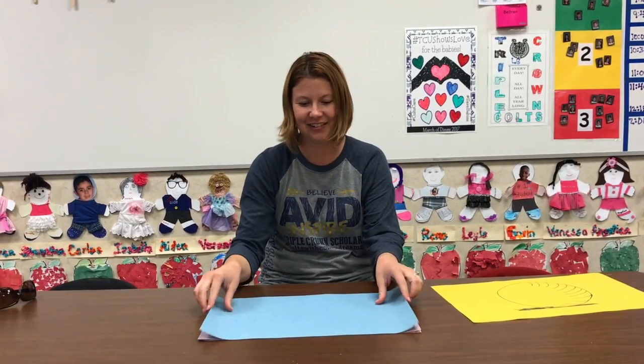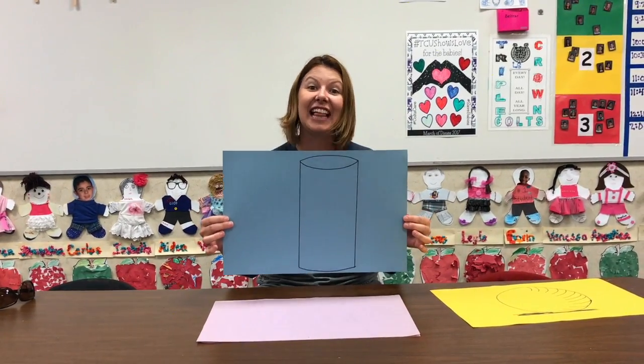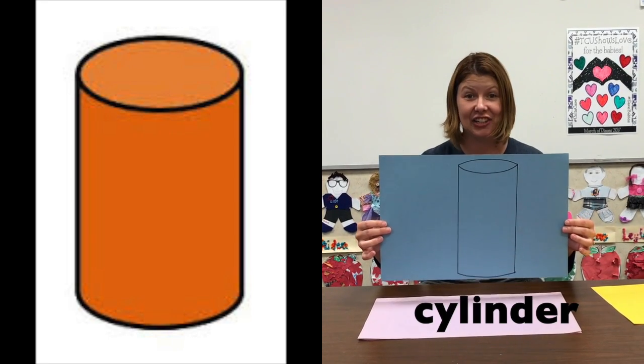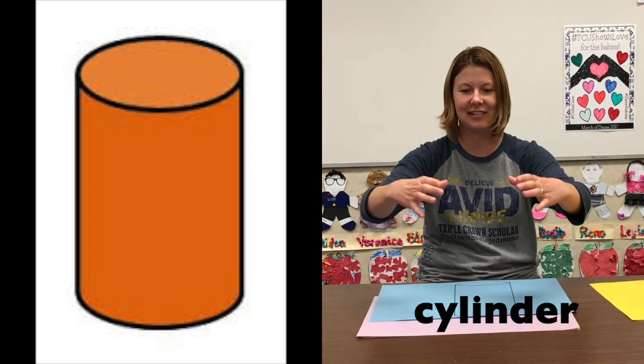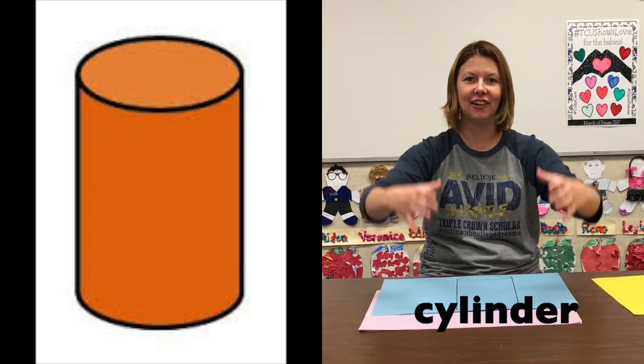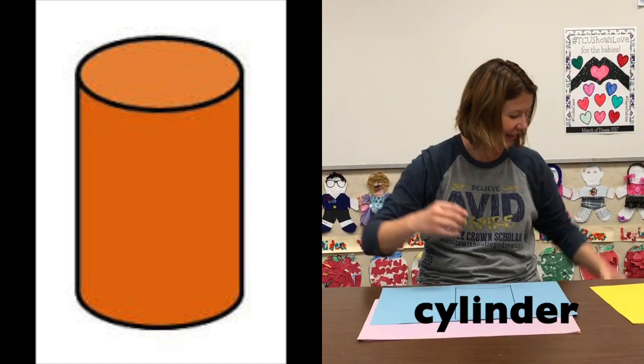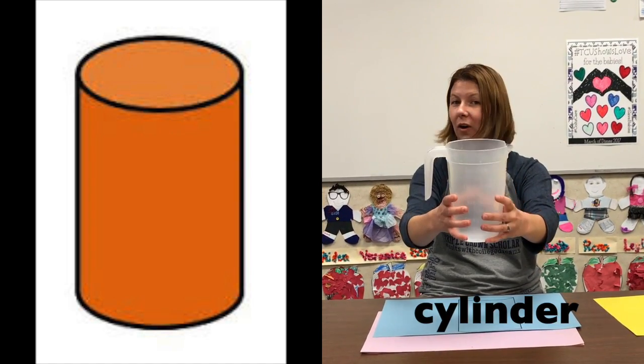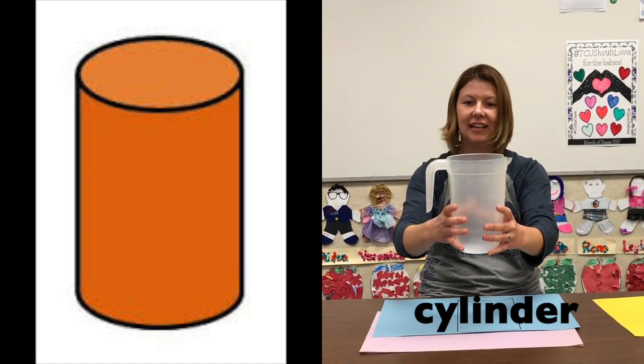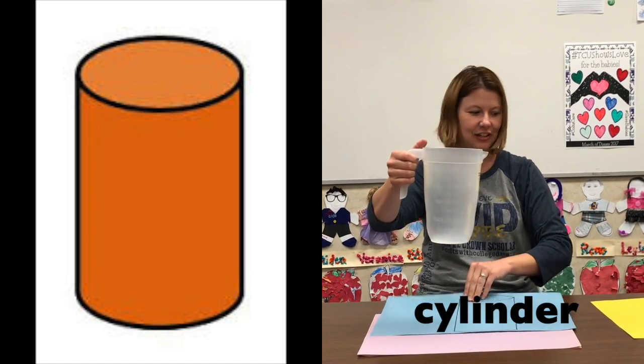Next we have a cylinder. Let's say cylinder. Can you make a cylinder with your hands? Both hands together make a cylinder. Good job! Here is an example of a cylinder. I can pour water in it. I can pour juice in it. It's something I can put things in. Cylinder.